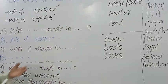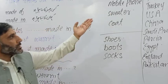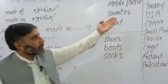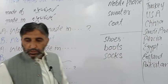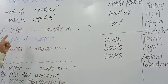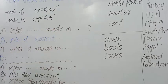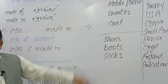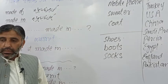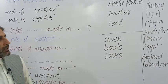For example, agar haem se koho yeh mobile phone hai aur yeh suppose Turkey ka bana hua hai. Mobile phone kahan ka bana hua hai? Turkey. Meh aap se puchhlo: Was this mobile phone made in India? India ka bana hua tha? No, it wasn't. It was made in Turkey. Nahi, India ka nahi — Turkey ka bana hua tha. Agar haem mein haep se yeh sweater dekh lein — China ka bana hua hai sweater. Toh agar mein poochhlo: Was this sweater made in USA? No, it wasn't. It was made in China.